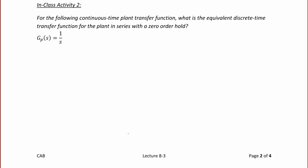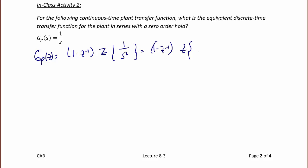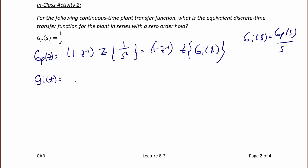In class activity 2, for the following continuous time plant transfer function, what is the equivalent discrete time transfer function for the plant in series with a zero-order hold? GP(s) = 1/s. So GP(z) = (1 − z^(−1)) times the Z-transform of 1/s², or (1 − z^(−1)) times the Z-transform of GI(z), where GI(s) = GP(s)/s. So GI(t), the inverse Laplace transform of 1/s², is t · u(t).